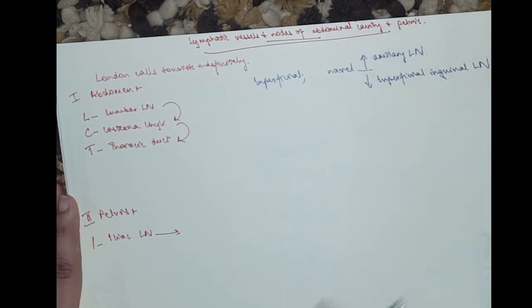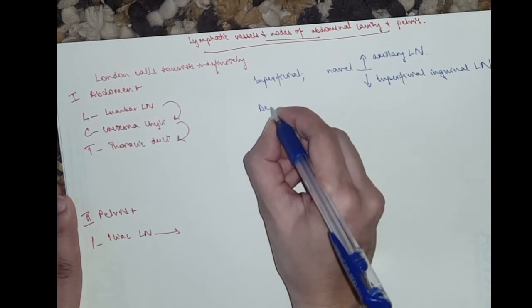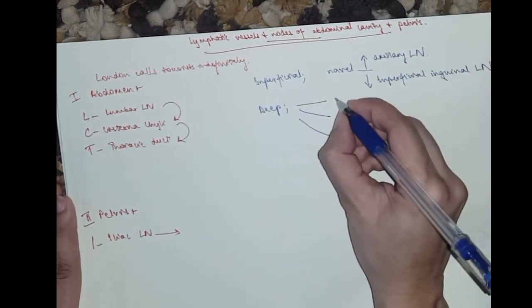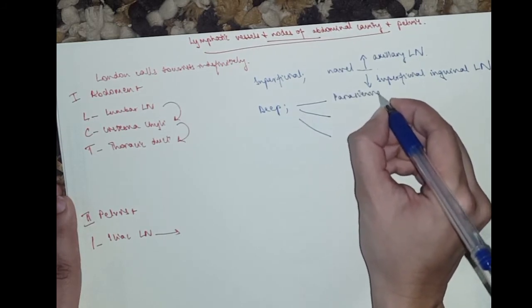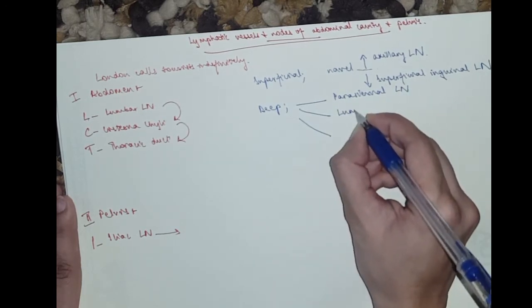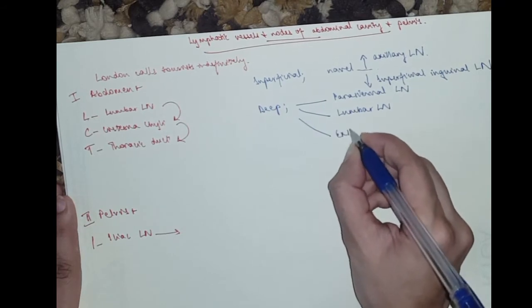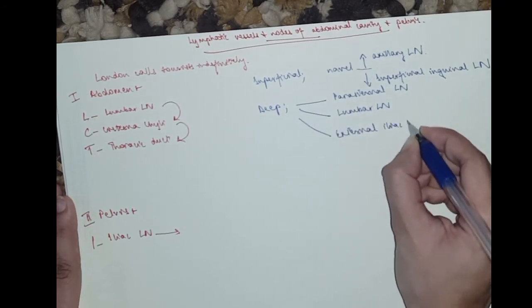which I mentioned in the lower extremity video. So then we go to deep, there are three. The thoracic ones obviously will go to the parasternal lymph nodes, then lumbar lymph nodes and external iliac lymph nodes.